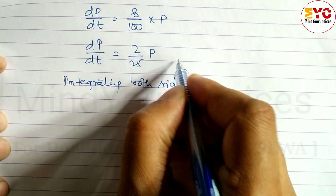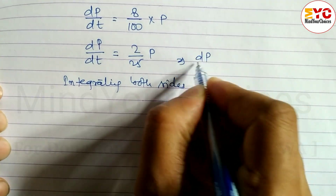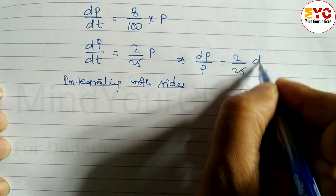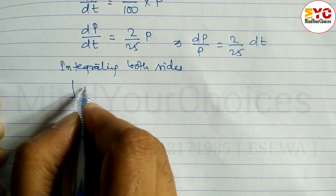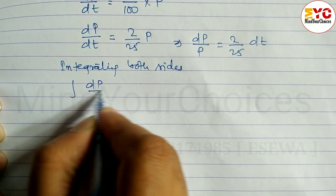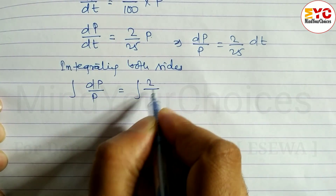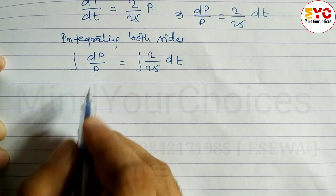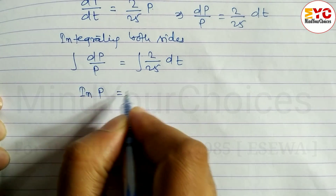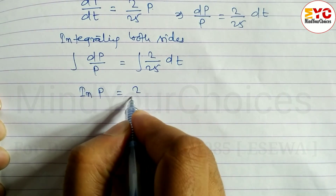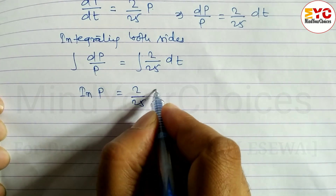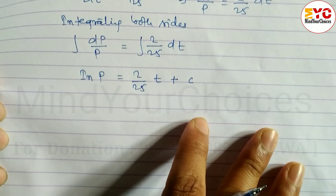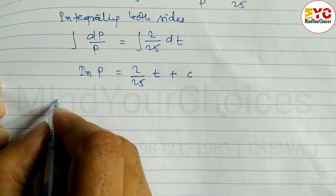Separating variables: dp/p = (2/25)dt. Integrating both sides: ∫dp/p = ∫(2/25)dt, which gives ln p = (2/25)t + c. This is equation 1.